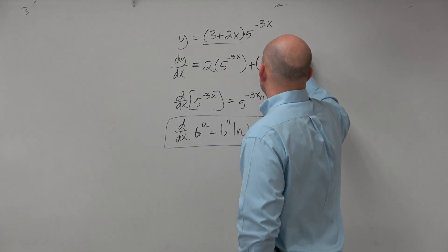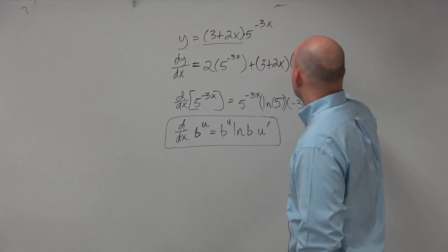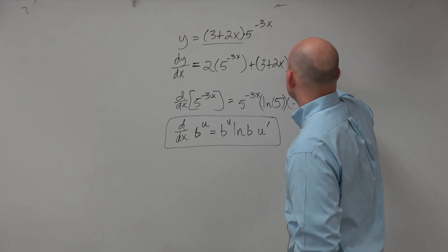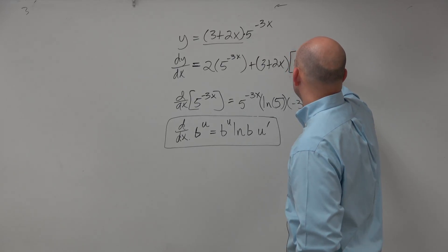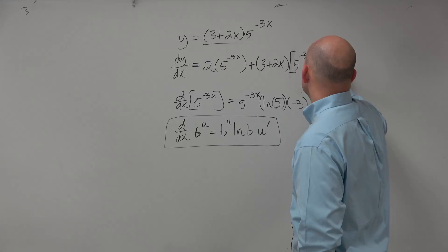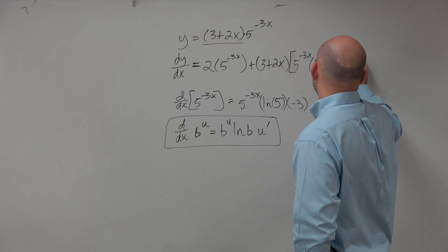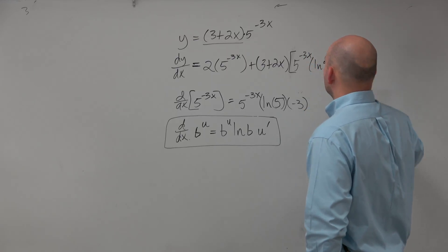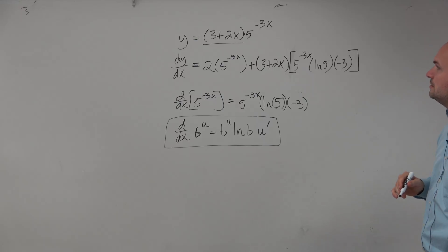OK, that wasn't bad at all. Plus 3 plus 2x, and then times, I'm just going to use parentheses and brackets, 5 to the negative 3x, times ln of 5, times negative 3.